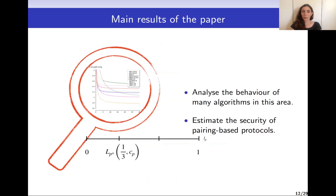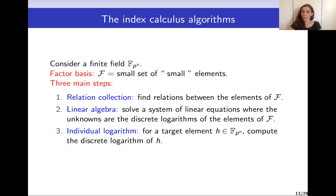The focus of this paper is to study the behavior of all algorithms that exist in this area in order to draw conclusions for the security of pairing-based protocols. Most of these algorithms come from a family called index calculus algorithms, and they all follow the same steps. We consider a finite field FPN and a factor basis F consisting of a small set of small elements. The three main steps are: a relation collection step, where we find relations between elements of our factor basis; a linear algebra step, where we solve the resulting system of linear equations.